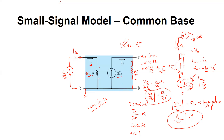That is how we analyze this small signal model and compute voltages and currents to derive expressions for different kinds of gains — voltage gain, current gain, trans-impedance gain, etc. For this common base configuration, the current gain is equal to one and the voltage gain equals R_L divided by r_e, where r_e is the base-emitter resistance. Hope you understood this video — if you did, please share it with others.